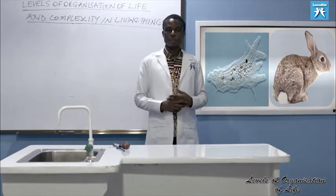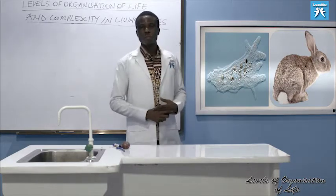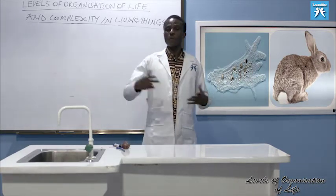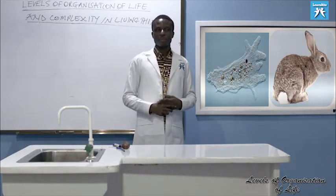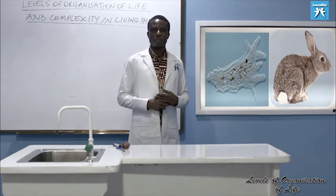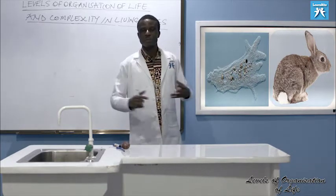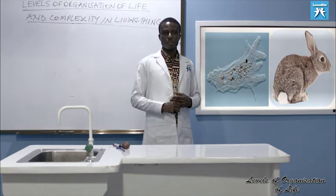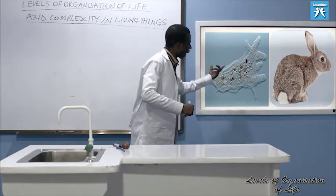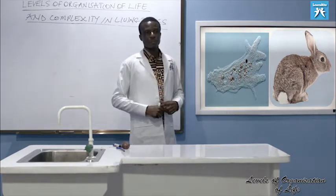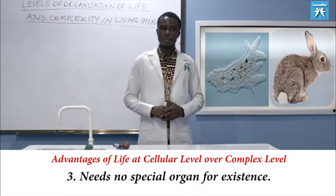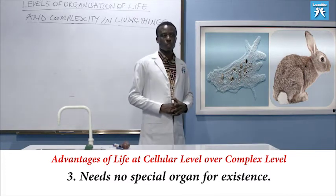If you don't produce too much waste in your school, you don't need a waste management company to come and convey it. If your school is made up of 100 people, they don't need to come every day — that's the advantage of a simple system over a complex one. Let's look at the third advantage of life at the unicellular level over the complex: there is no need for a special organ for existence.